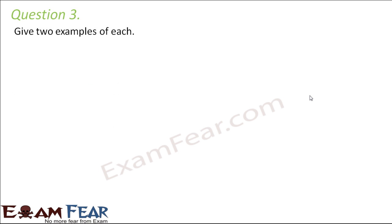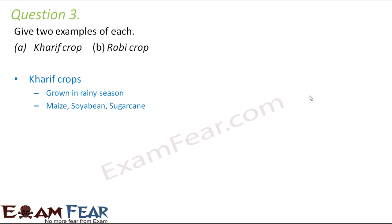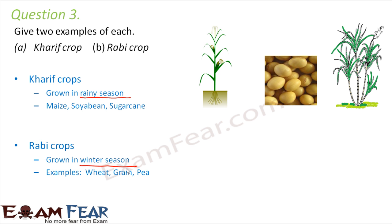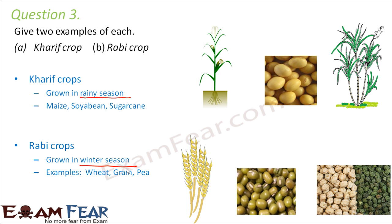Question number three: give two examples each of Kharif crops and Rabi crops. Kharif crops are grown during the rainy season and need more water — examples include maize, soybean, and sugarcane. Rabi crops are grown in the winter season, need lesser water, and a moderate climate — examples are wheat, gram, and pea.